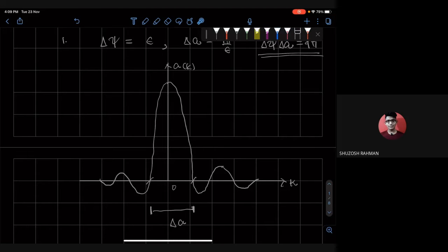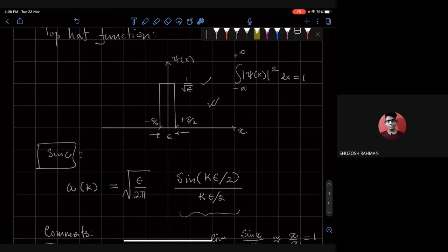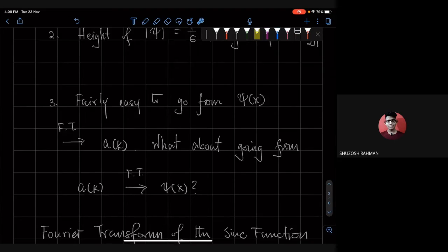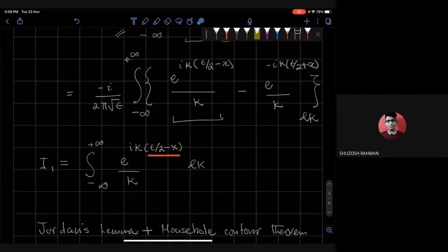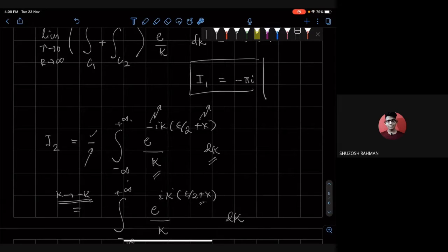So it seemed very mysterious to me at first, how integrating this function—this guy will give me this guy. But it turns out that complex analysis really helps visualize this method. Okay? Any questions?